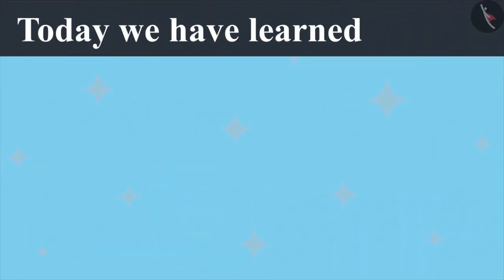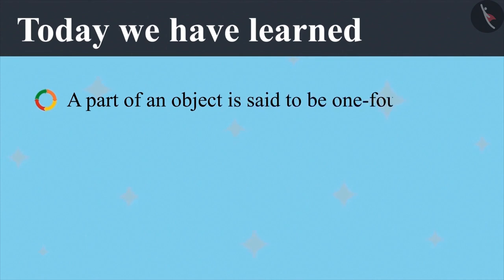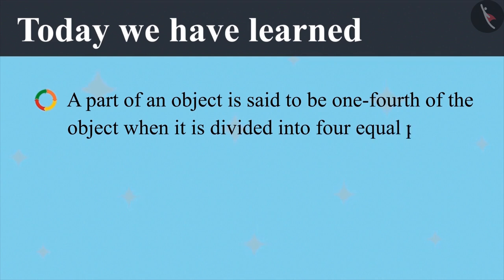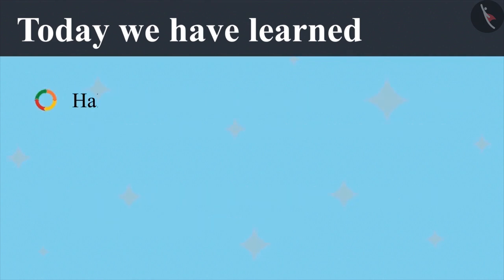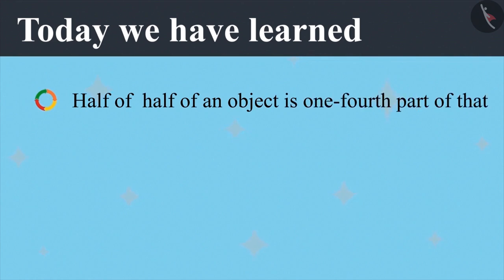Today we have learned a part of an object is said to be one-fourth of the object when it is divided into four equal parts. To find one-fourth part of an object, we find half of the half of an object. We can also say that half of half of an object is one-fourth of that object.